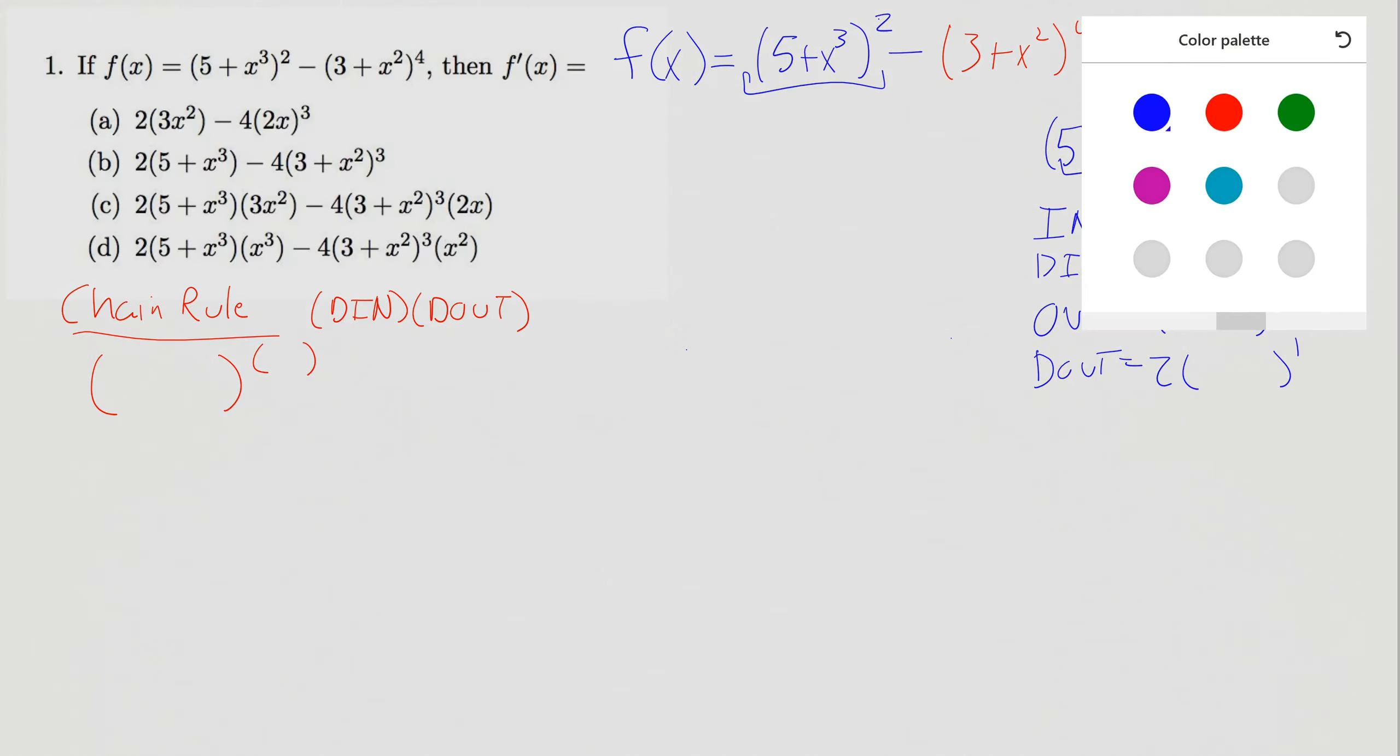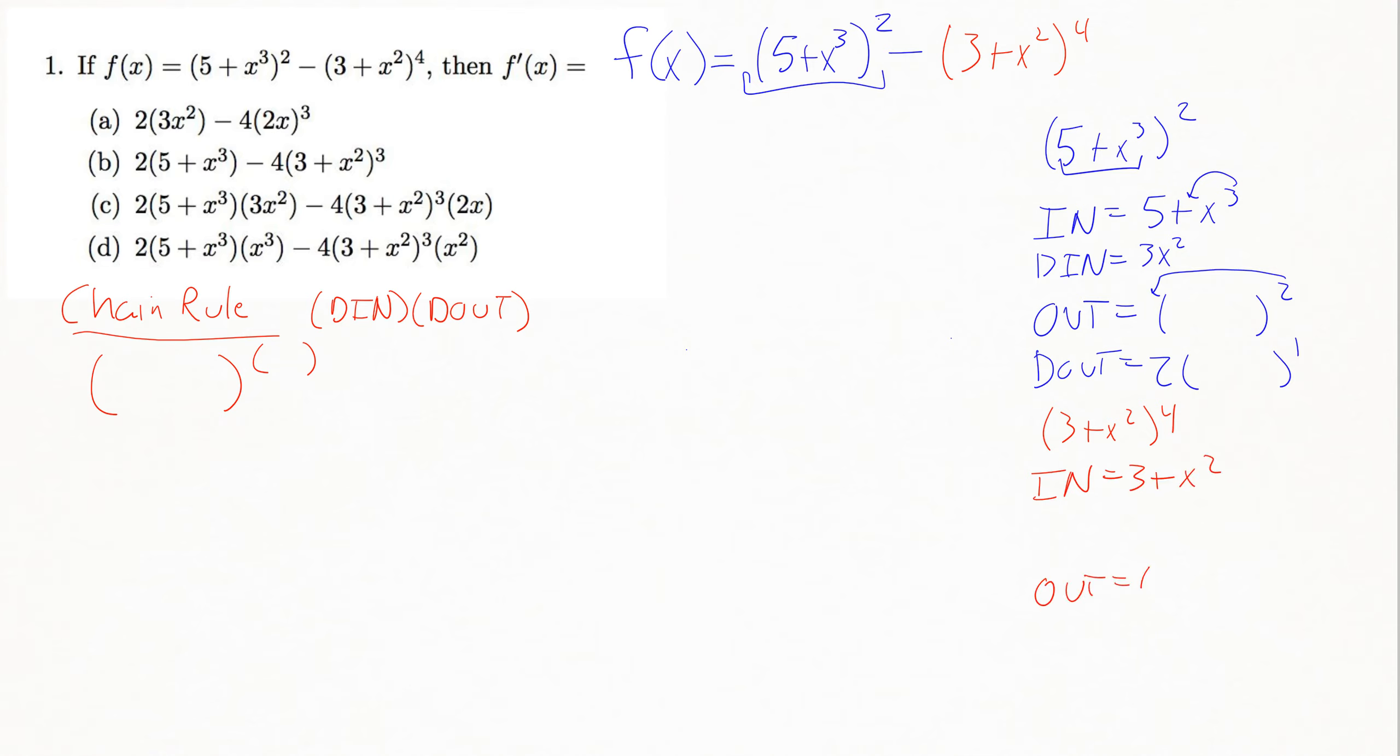So that'll be that chunk. And then we can go ahead and do the same thing with our 3 plus x squared to the 4th right now, where our inside piece in this situation would be the 3 plus x squared. And our outside piece would be a bunch of stuff to the 4th power. So our d in, the 3 again is a constant, so it would go away. And then we do a power rule on that x squared, bringing the 2 down, x, and then subtracting 1 from the power would leave us with just a single power on that x.